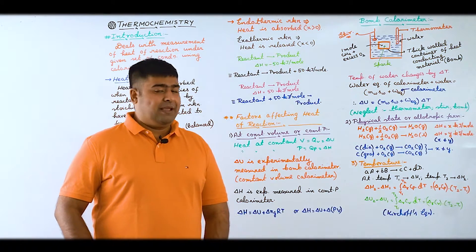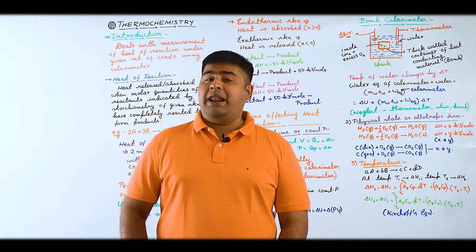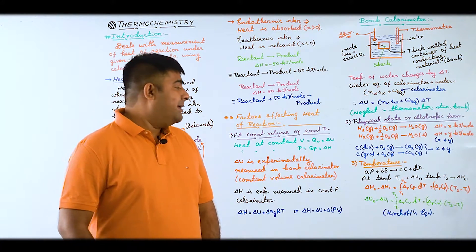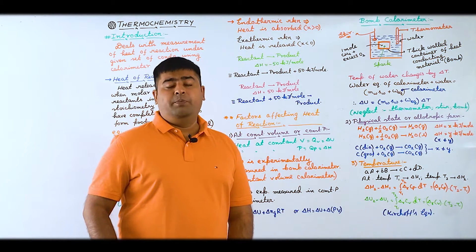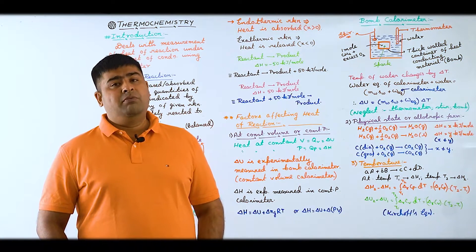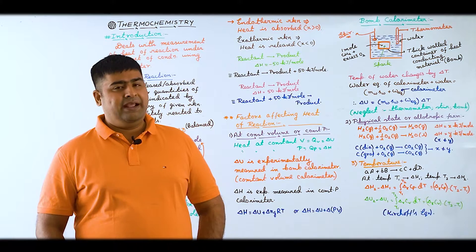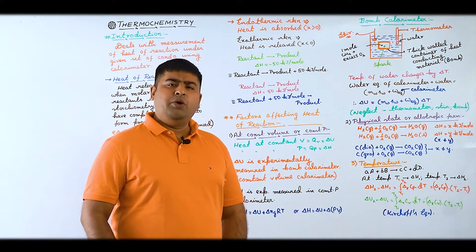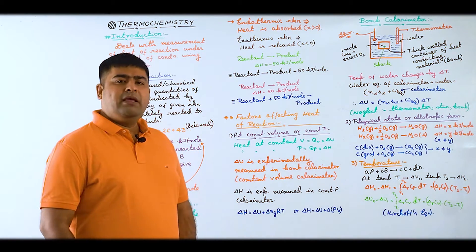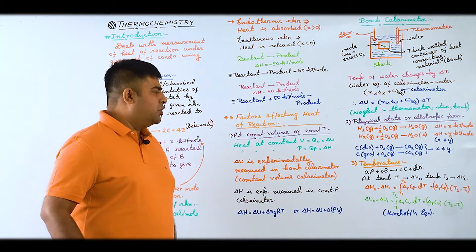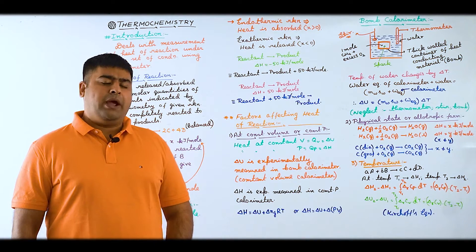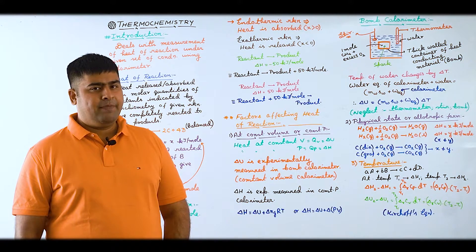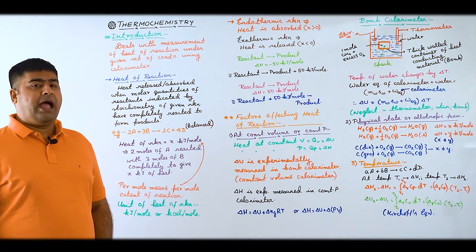The third factor is the temperature of the reaction, which we have discussed before via Kirchhoff's law. For a reaction AA + BB → CC + DD, if ΔH1 is the enthalpy change at T1 and ΔH2 at T2, then ΔH2 − ΔH1 = ∫(T1 to T2) ΔCp dT. The same relation holds for ΔU: ΔU2 − ΔU1 = ΔCv × ΔT. These are the Kirchhoff equations. So the heat of reaction definitely changes as temperature changes.